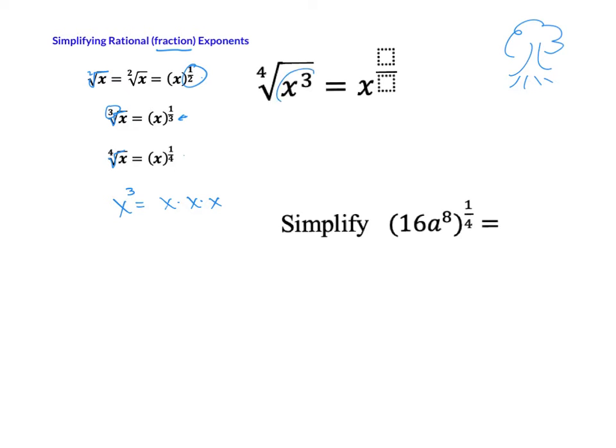So x to the 3/4 means there's a 3 as the exponent and a 4 is the root. We're going to write it more like this than like this just because it's easier to simplify when you have larger problems. So let's simplify this problem right here.